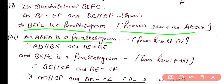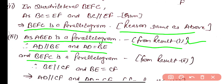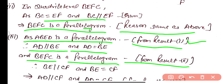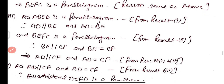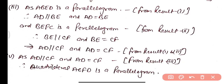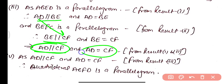Part 3 & 4: Since ABED is a parallelogram, AD is parallel to BE and AD equals BE. Since BEFC is a parallelogram, BE is parallel to CF and BE equals CF. Combining these results, AD is parallel to CF and AD equals CF.